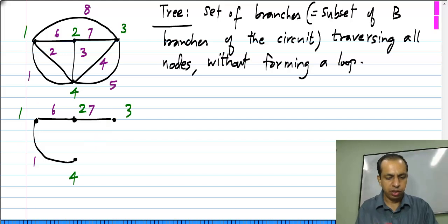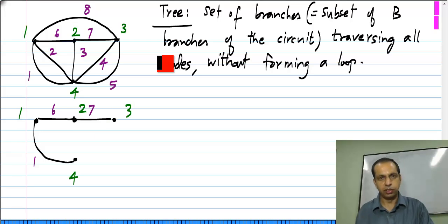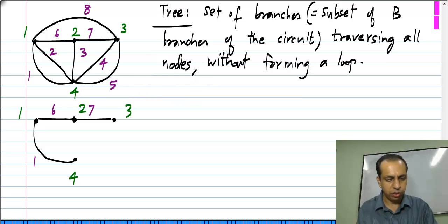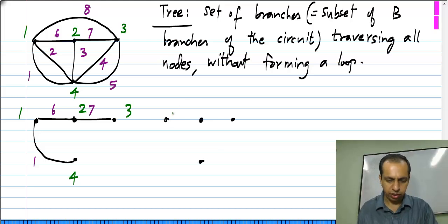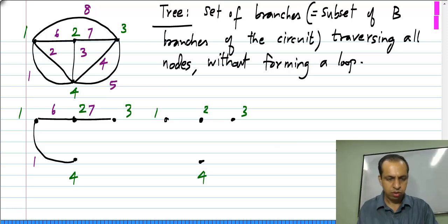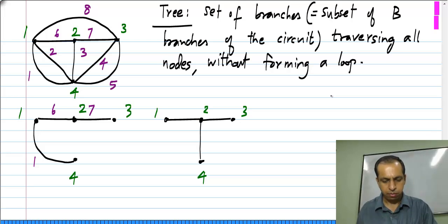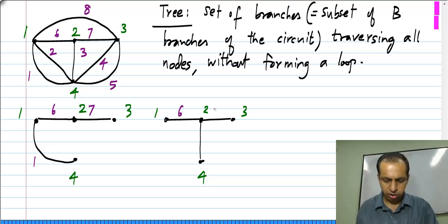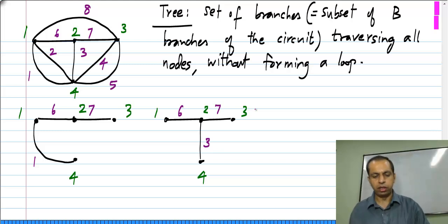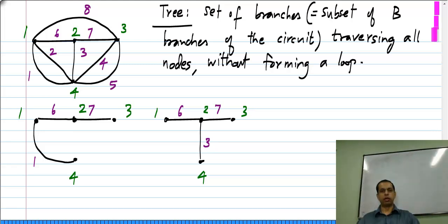Of course, this is not the only tree that is possible — there are many others. You can just take this graph and form them yourselves. I will show you just one other example. I can take branches 6, 7, and 3. Again, we have a tree where all nodes are connected to at least one branch, but there is no loop. So this is also a valid tree and you can form many others.